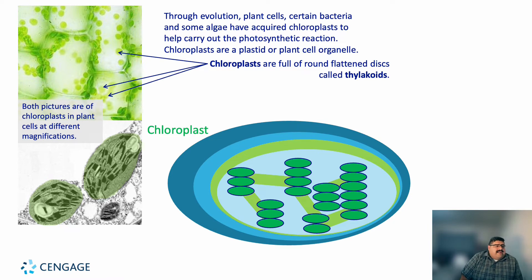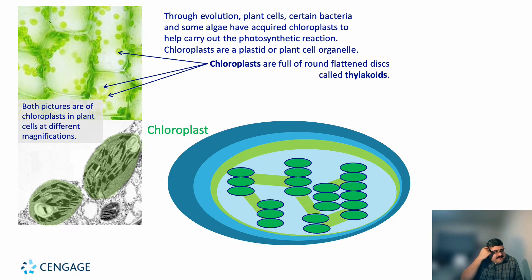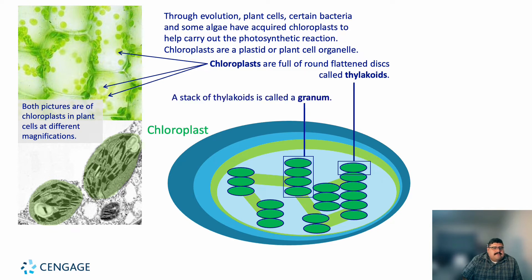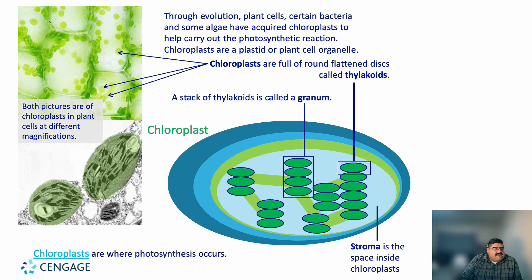Through evolution, plant cells, certain bacteria, and some algae have acquired chloroplasts to help carry out photosynthetic reactions. Chloroplasts are plastids — plant cell organelles. Chloroplasts are full of rounded discs called thylakoids. A stack of thylakoids is known as a granum. The stroma is the space inside the chloroplast, and this is where photosynthesis actually occurs.